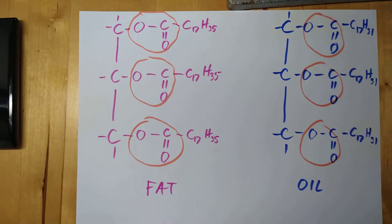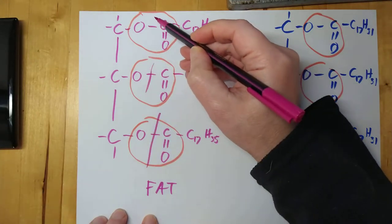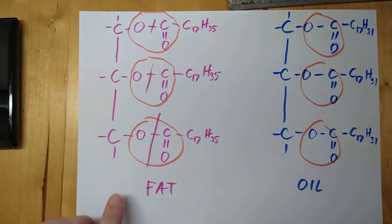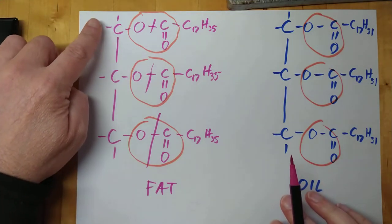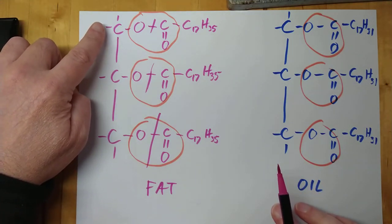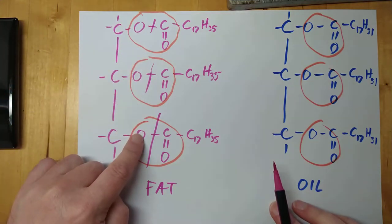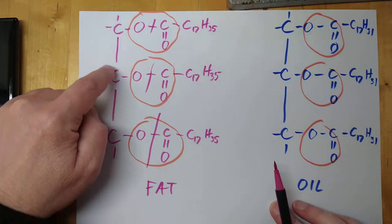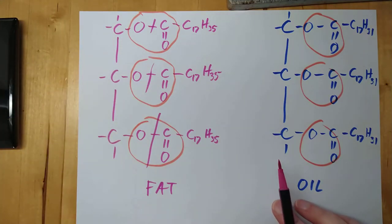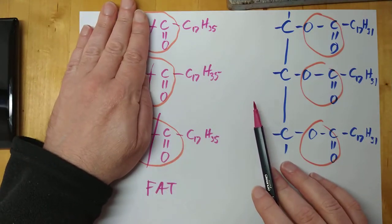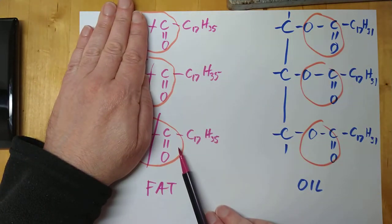So if we were to reverse engineer these fats and oils, if we were to split them apart into what they were originally created from, like I showed you in the previous video, what we would do is we would break that bond there, that bond there, that bond there, and we'd recreate the alcohol. Now, it's an unusual alcohol this time because I'm hoping you can see it's going to have three hydroxyl groups. It's propane-1,2,3-triol, in fact, is its proper name. I'll draw it on a separate sheet of paper, don't worry, just to clarify.